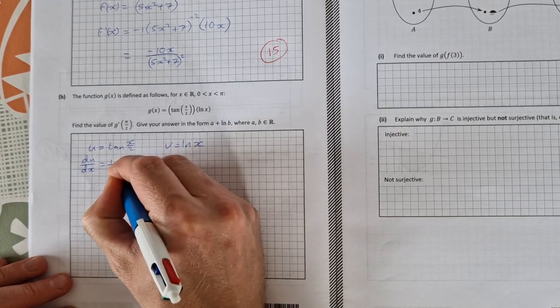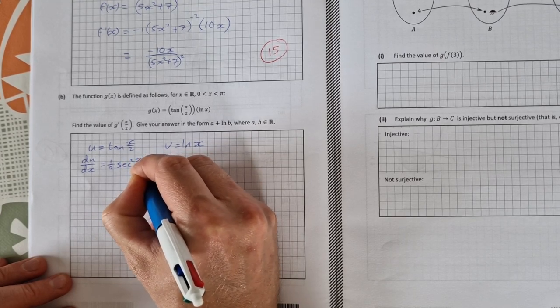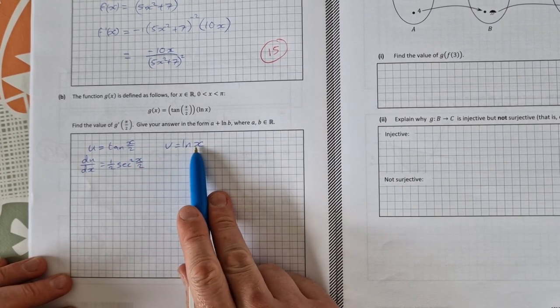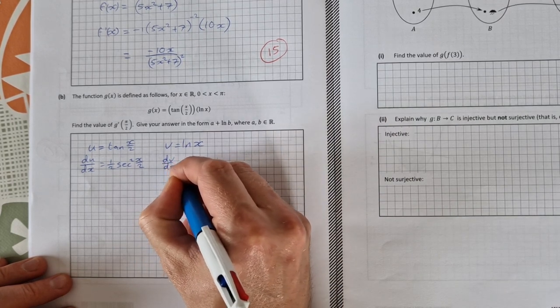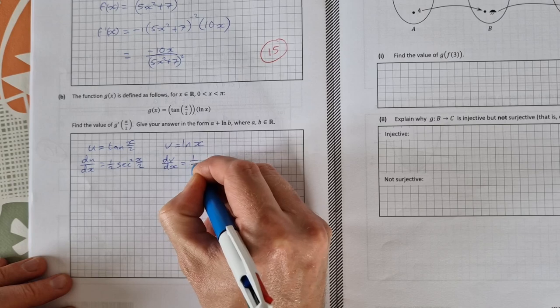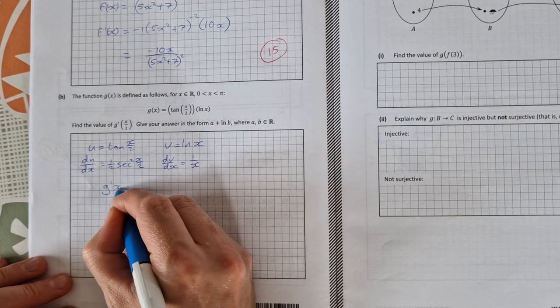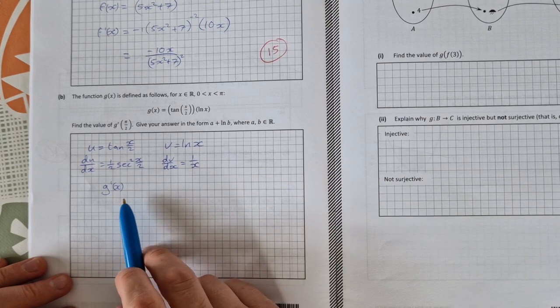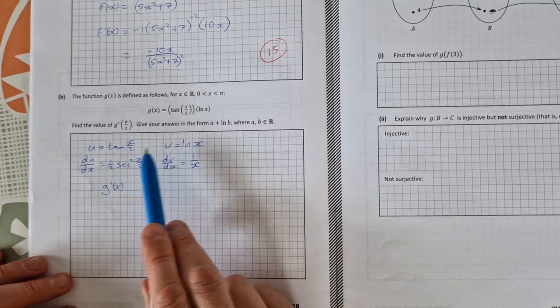And then the derivative of natural log of x is 1 over x. So dv dx equals 1 over x. So then my derivative of g prime of x equals the product rule so it's u dv dx plus v du dx.